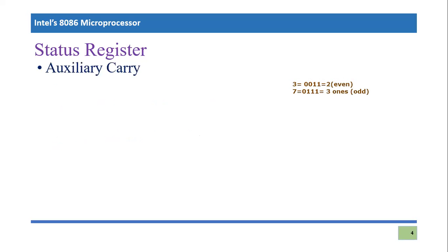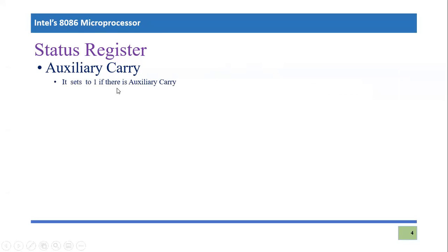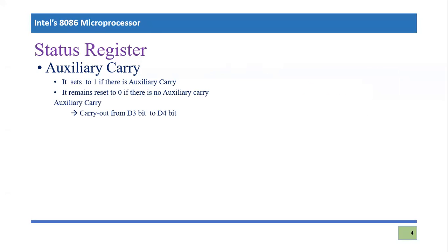The next flag is the auxiliary flag. If you remember, we have already discussed the concept of digit carry in the PIC 18F microcontroller — digit carry and auxiliary carry have the same meaning. It is related to addition and subtraction. It is set to one if there is an auxiliary carry or digit carry, and remains zero if there is none. Auxiliary carry is basically a carry out from bit D3 to bit D4. In other words, it is a carry from one hexadecimal symbol to another — or a carry from the lower nibble to the higher nibble.